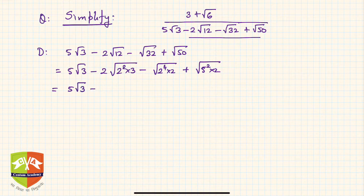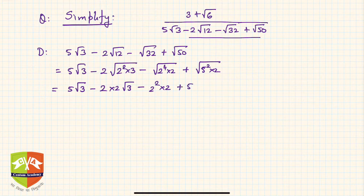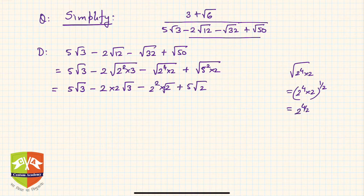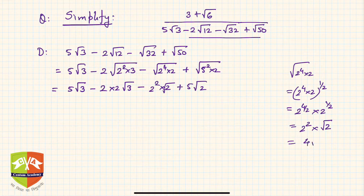Further simplification gives 5√3 minus 2 × 2√3, minus 4√2, plus 5√2. For example, 2⁴ × 2 is 2⁴ × 2 to the power of half, which equals 2^(4/2) × 2^(1/2), that is 2² × √2, which is 4√2. I'm giving one example; the rest you can work out yourself.